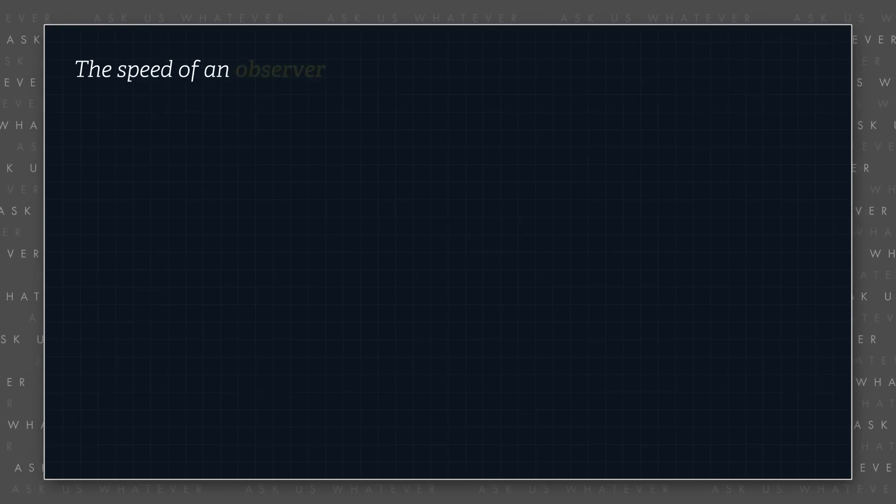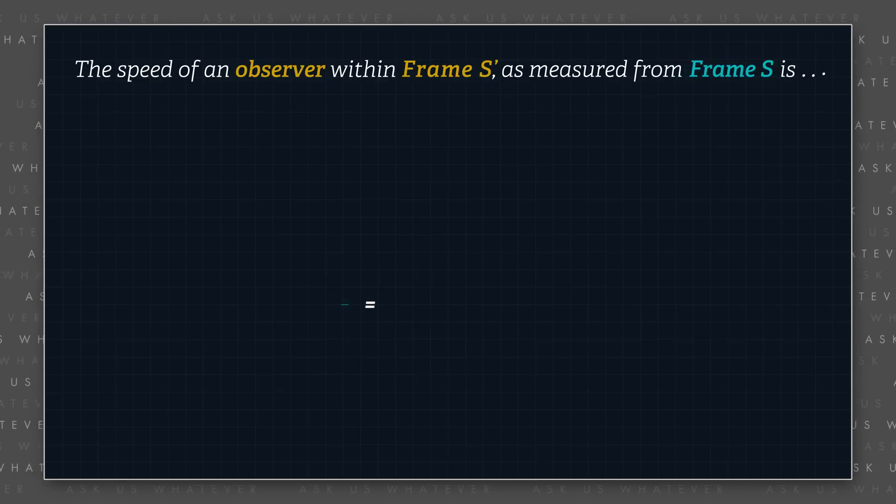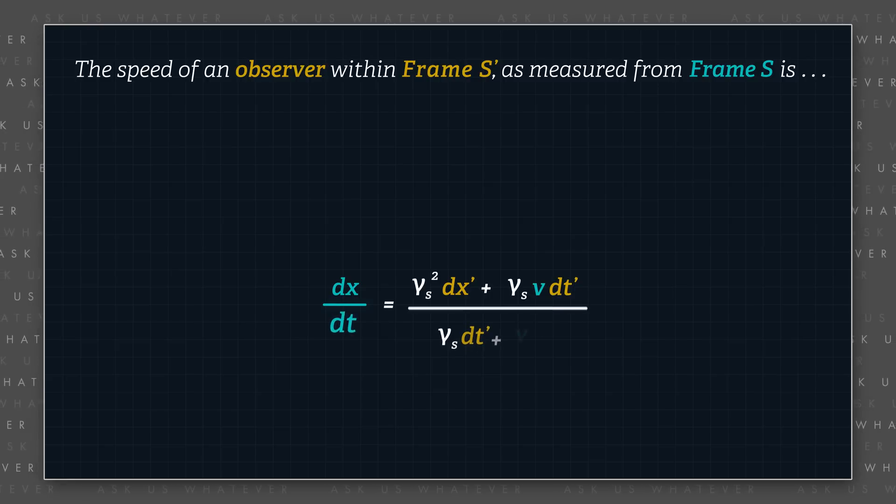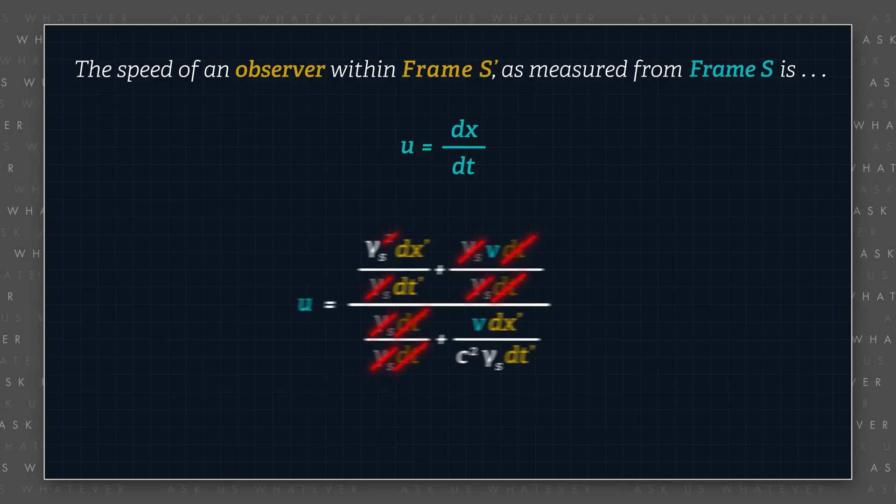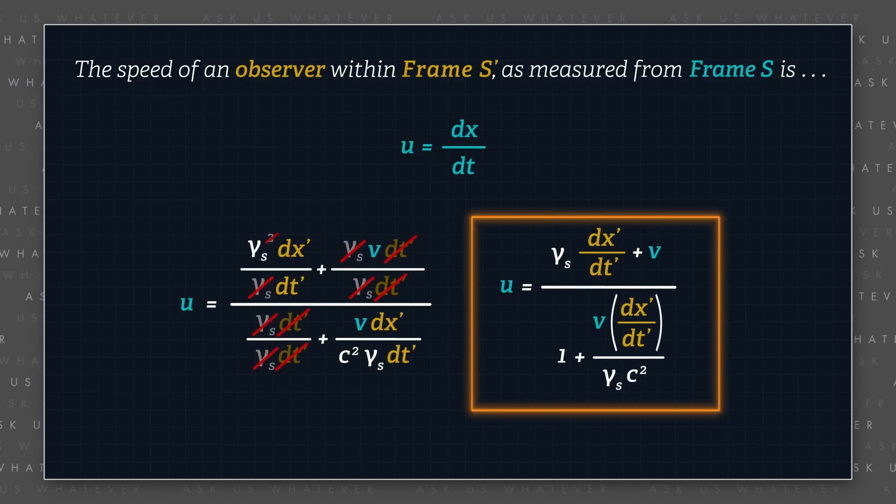The speed of an observer who is moving within frame s prime, as observed and measured from frame s, is then computed by dividing the alternative dx transformation by the alternative dt transformation. For simplicity, we will call speed dx dt u. If we divide numerator and denominator by gamma s times dt prime, we get the following.